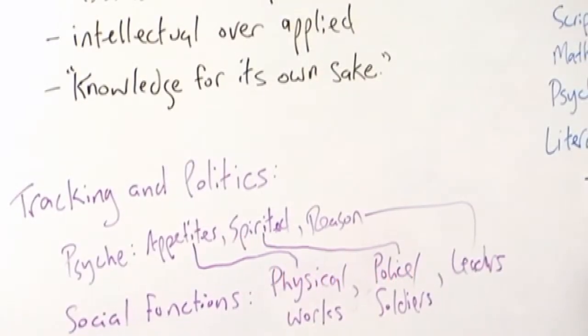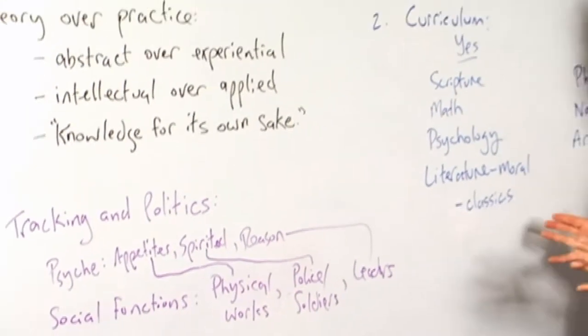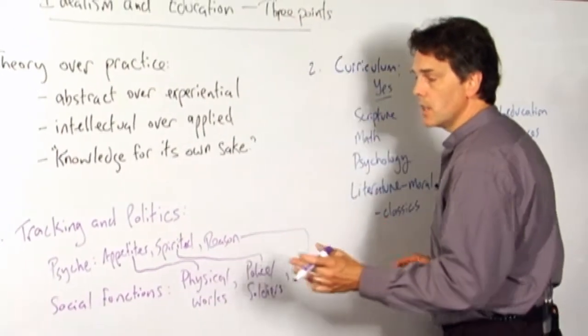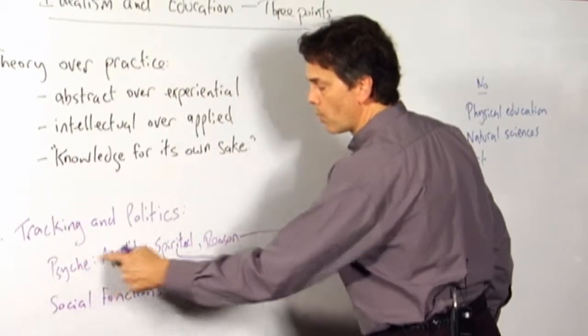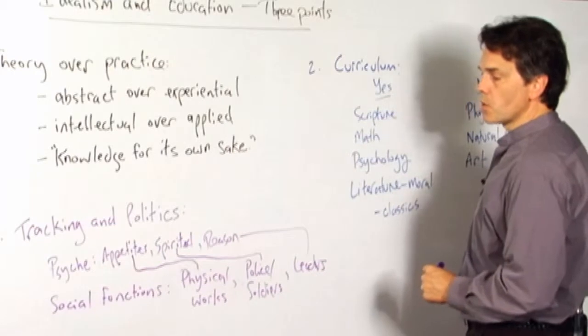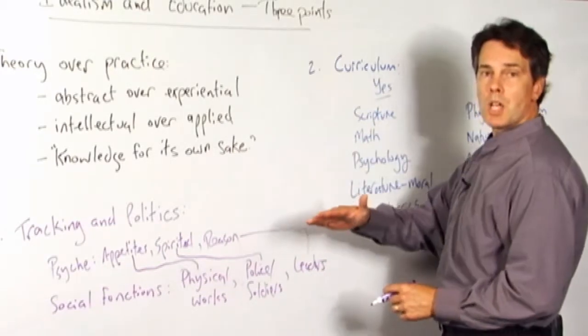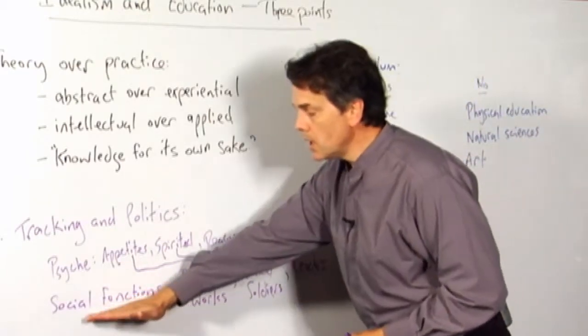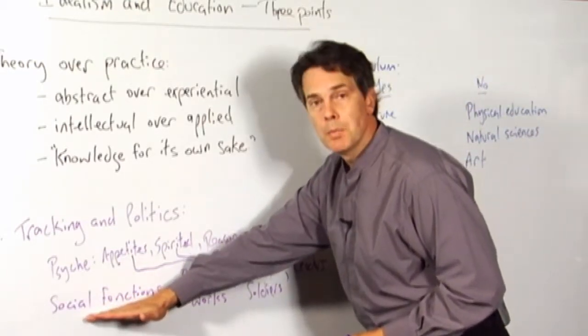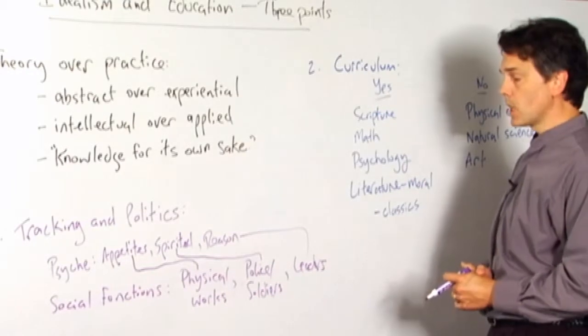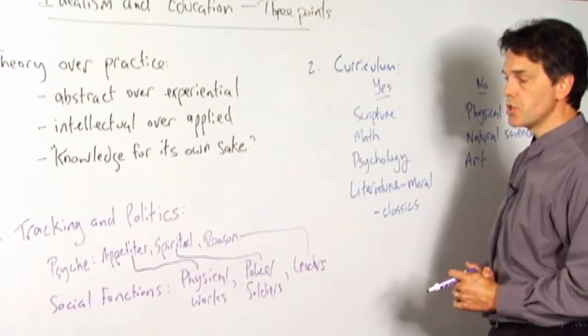Alright, so then, what we are trying to do in society is take people who are born with three different assortments of these psychological capacities here, put them through the educational process, and what we need is people come out who are able to perform what turns out to be three different kinds of social functions here.